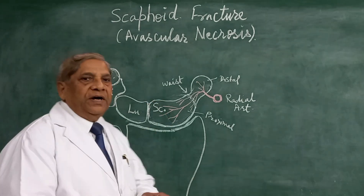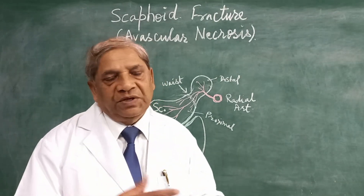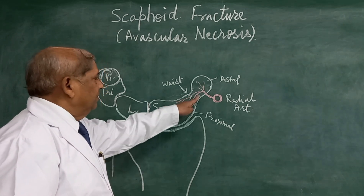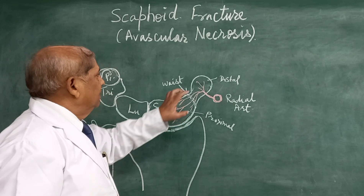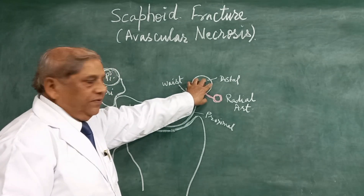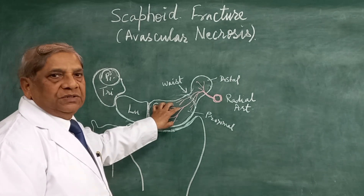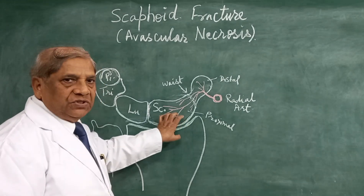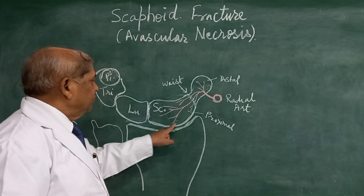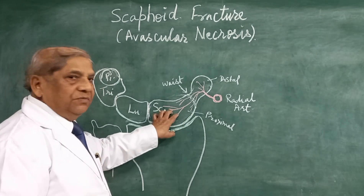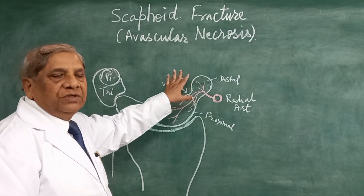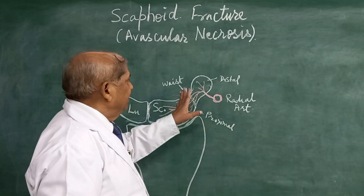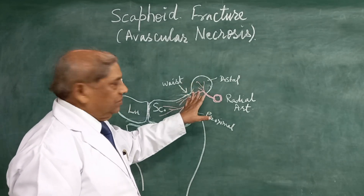This fracture of the scaphoid may be a complete fracture or an incomplete fracture. Some blood vessels are ruptured because the blood vessels pass from the distal part of the scaphoid to the proximal part, since most of the proximal part is involved in forming the articulation — the wrist joint with the radius — and here it articulates with the trapezium and trapezoid. Only the distal part beyond the waist has a non-articular surface.